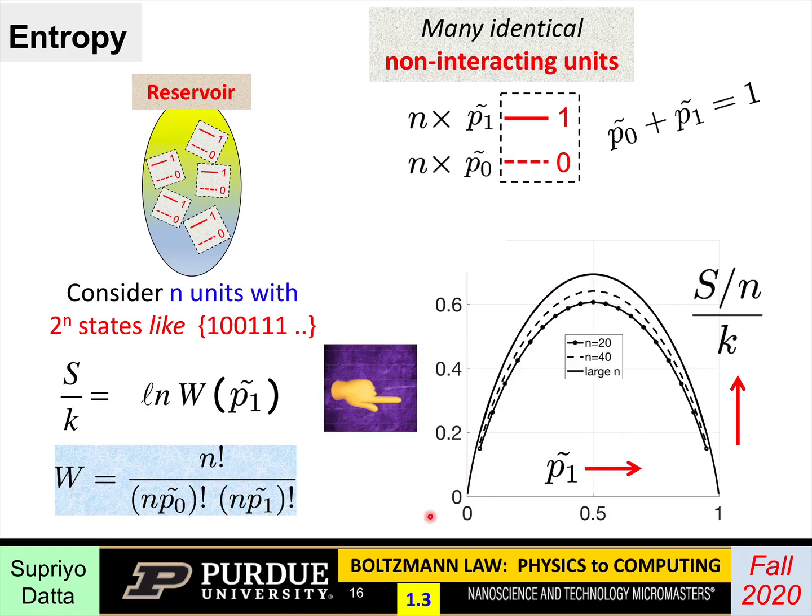Now if you take this function and plot it as a function of p1, you'll get a curve looking like this. When p1 is 0, at that end, as we discussed, there is only one state possible. When p1 is 1, again, only one state is possible. So at either of those ends, the entropy is 0. In the middle, when it's 0.5, that's when the entropy is a maximum. And if you plot it for different values of n, meaning the total number of units, then this is what you get for say 20 of them. This is what you get for 40. But as you increase it more and more, it converges to a particular curve. So once you get to say 1,000, it really doesn't matter whether n is 1,000 or 10,000. You get much the same curve.